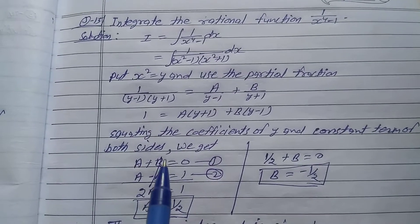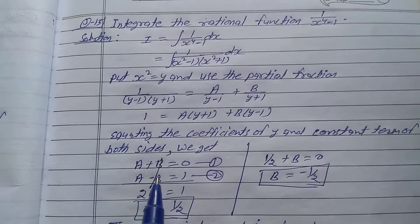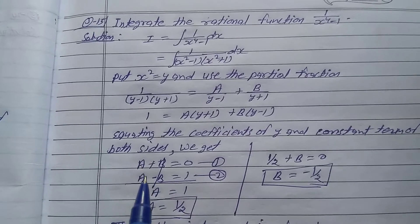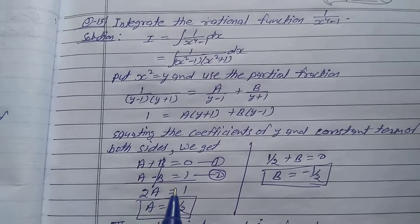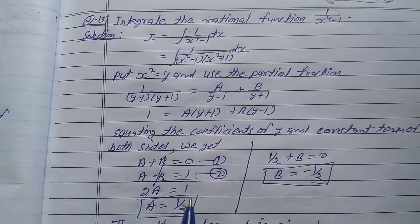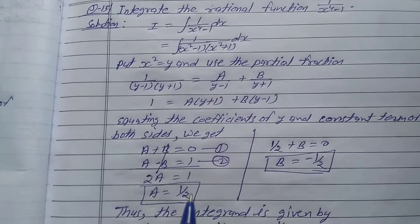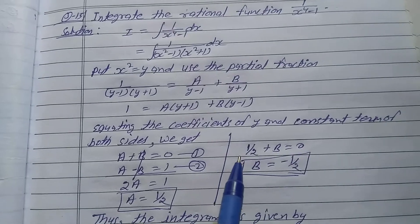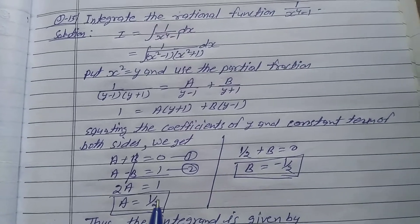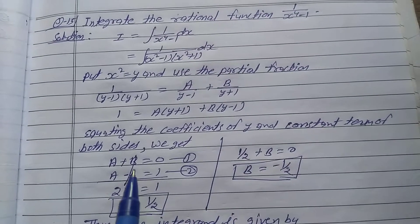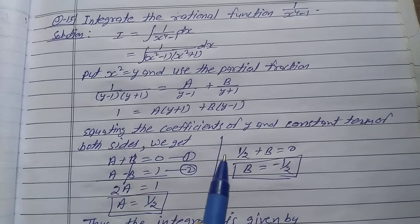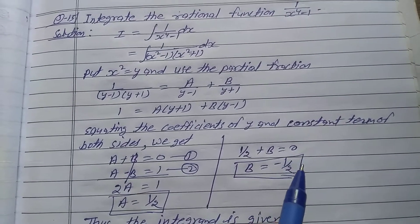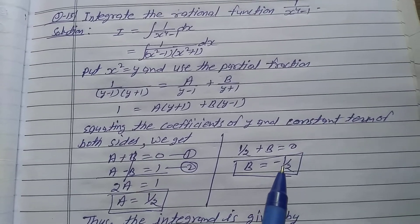Adding both equations, the B terms cancel, giving 2A equals 1, so A equals 1 by 2. Substituting A into equation one: 1 by 2 plus B equals 0, so B equals minus 1 by 2.